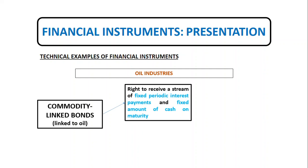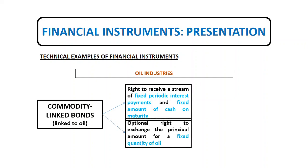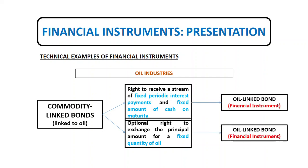The commodity-linked bond could have a right to receive a stream of fixed periodic interest payments and a fixed amount of cash on maturity, or it also has the optional right to exchange a principal amount for a fixed quantity of oil. This part of the contract does not affect the substance of the component of the assets. Thus, the financial asset of the holder and the financial liability of the issuer make the bond a financial instrument, regardless of the other types of assets and liabilities also created.